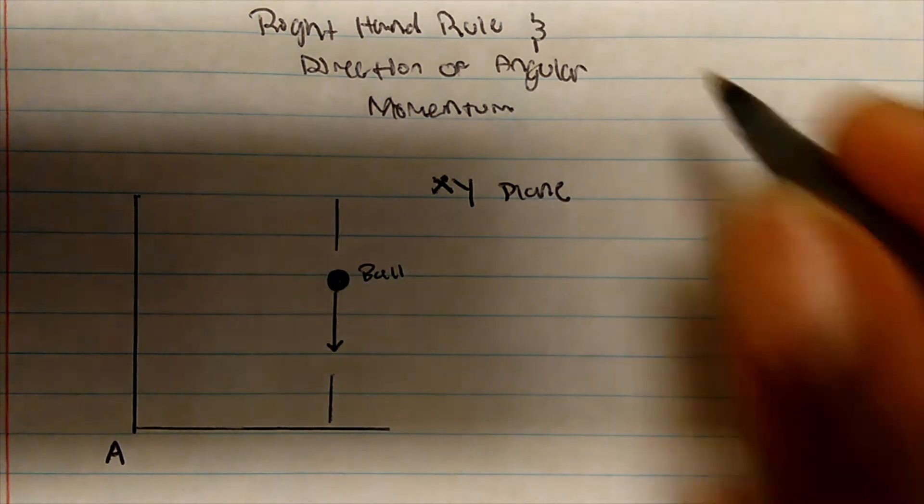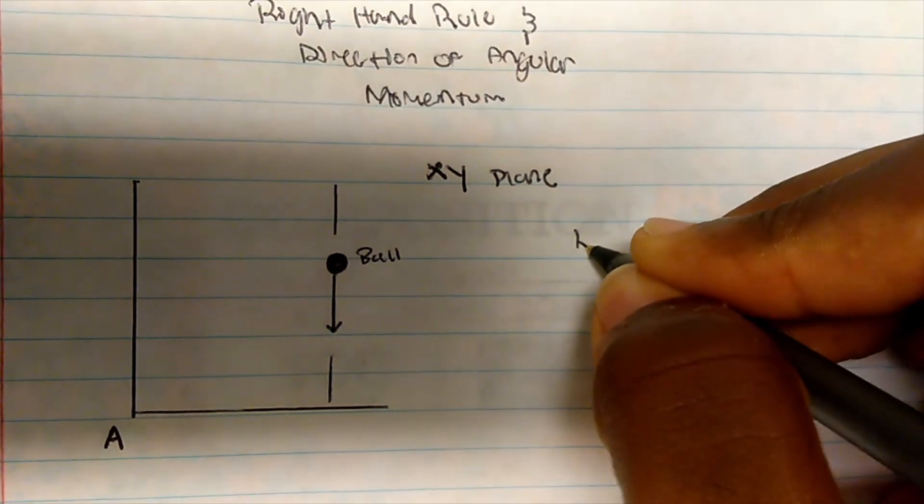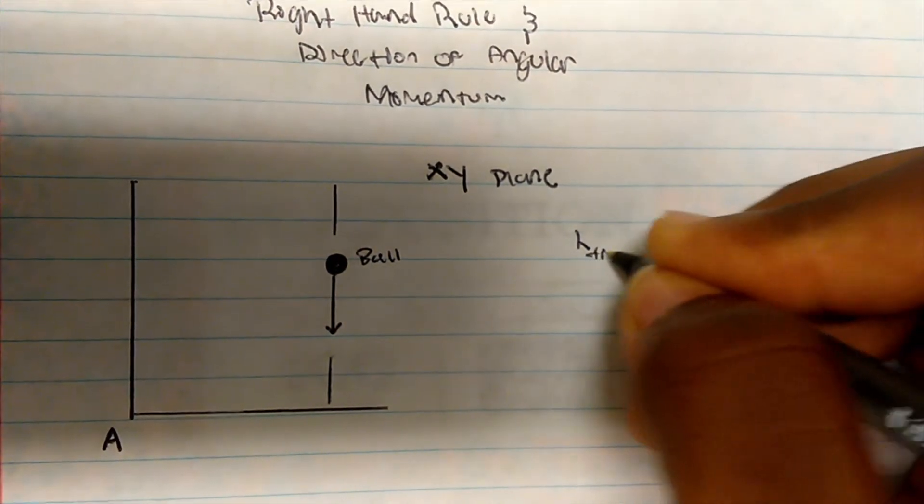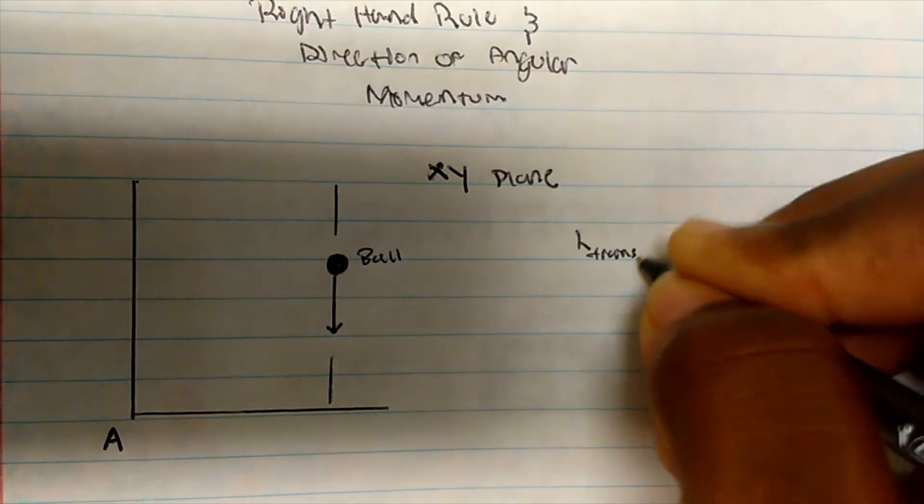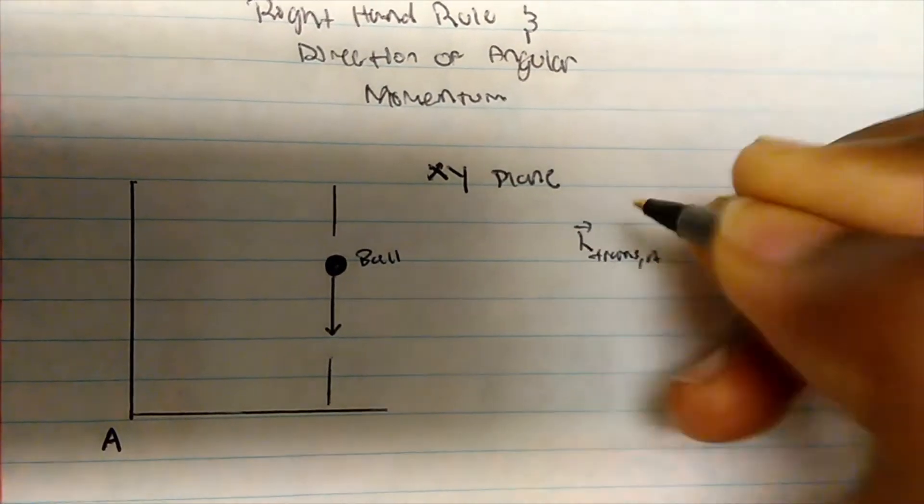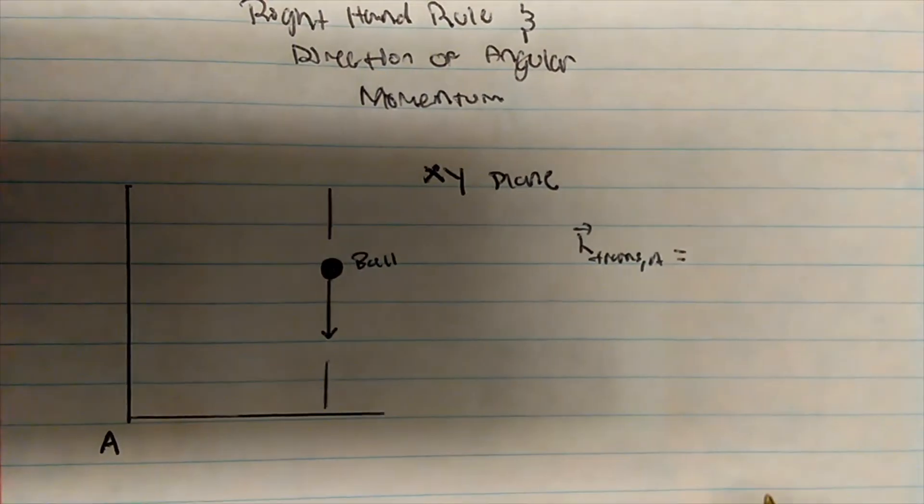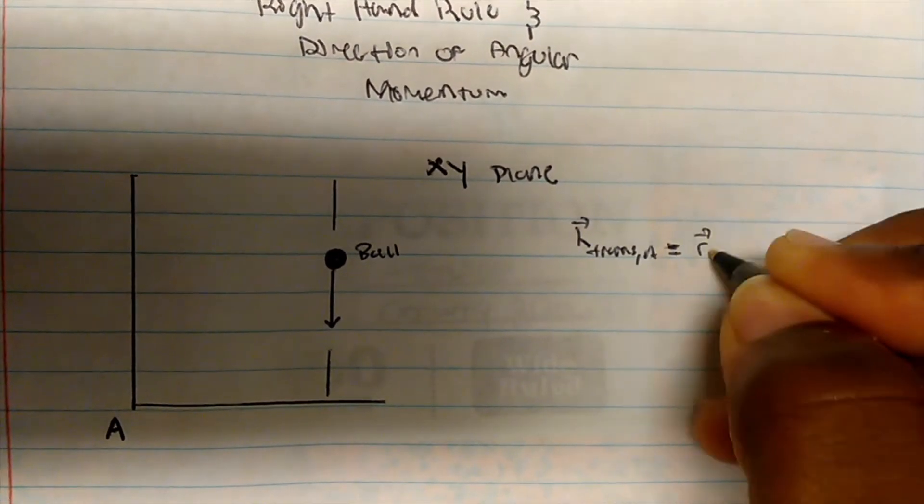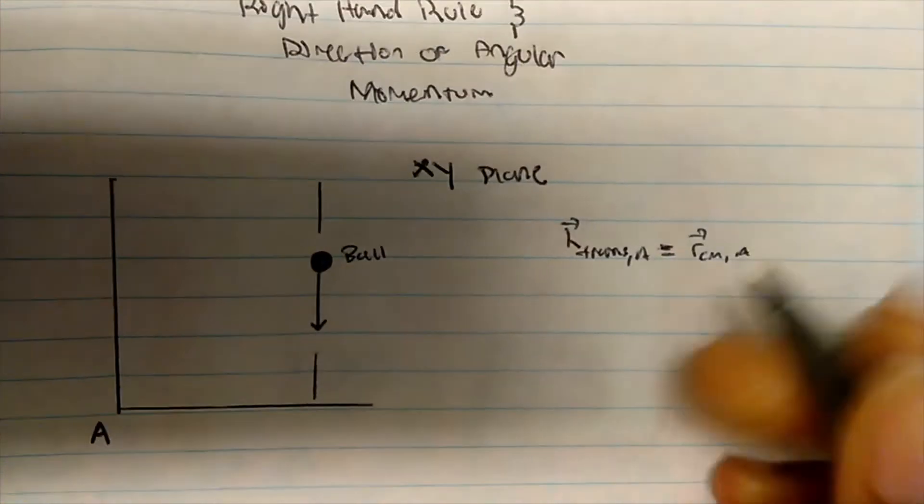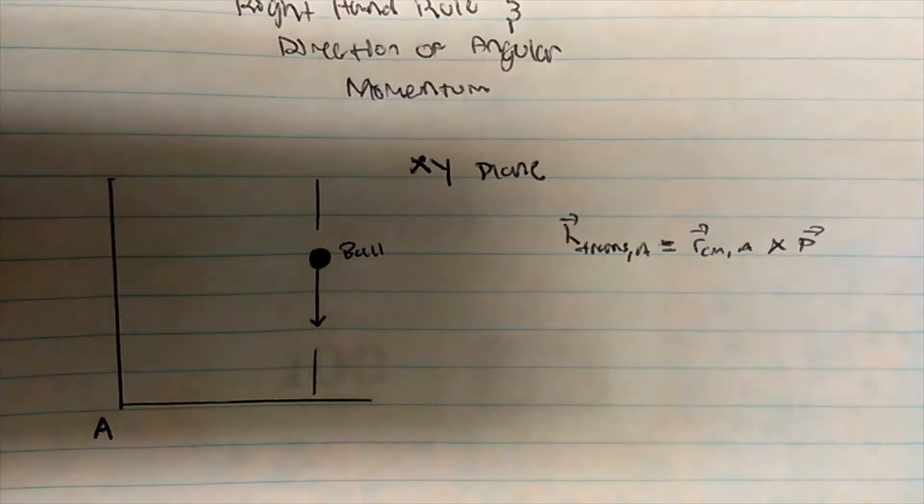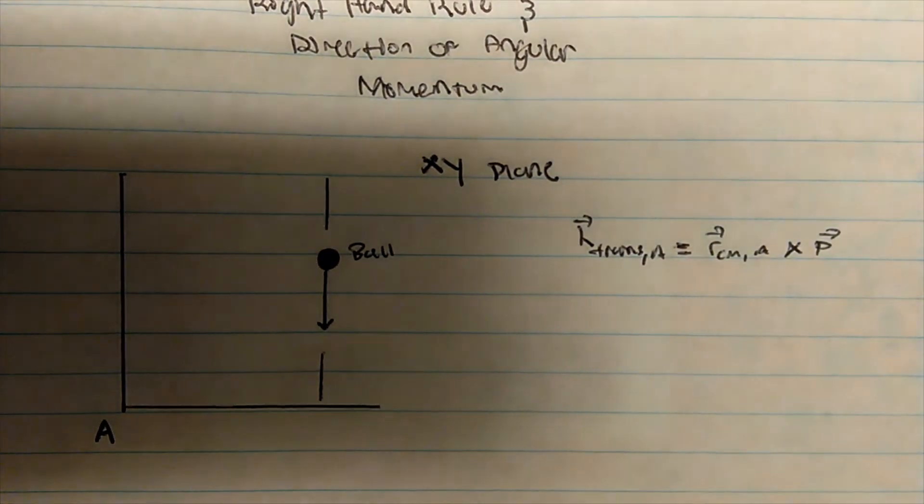Now, we want angular momentum, specifically the translational angular momentum about location A because we got to choose a point. Well, that is equal to what? That's equal to R relative to the center of mass of A crossed into the momentum. It's a cross-product.